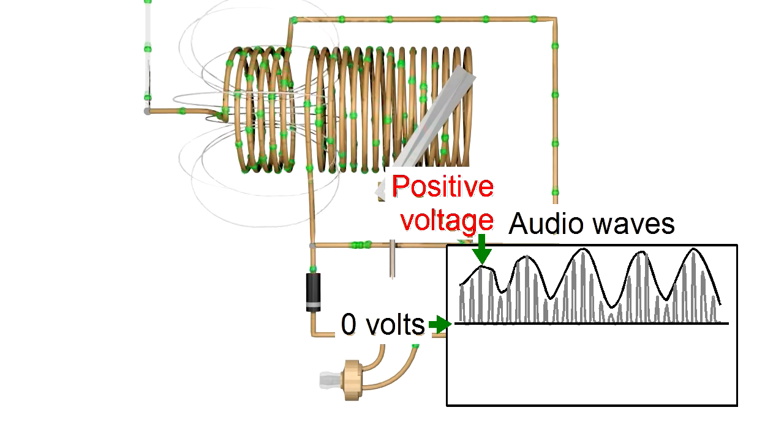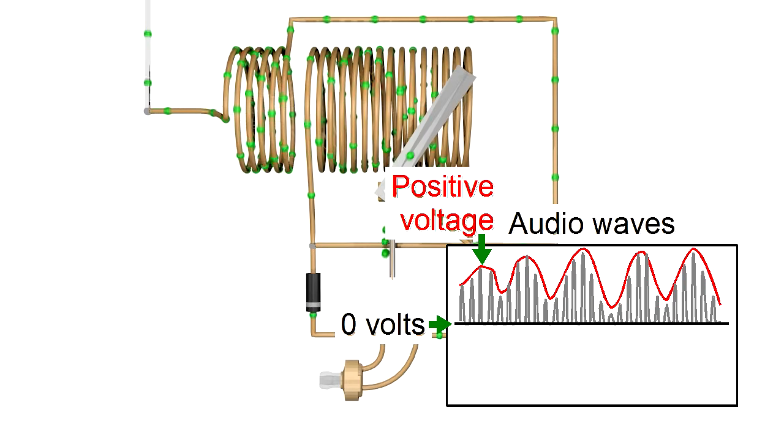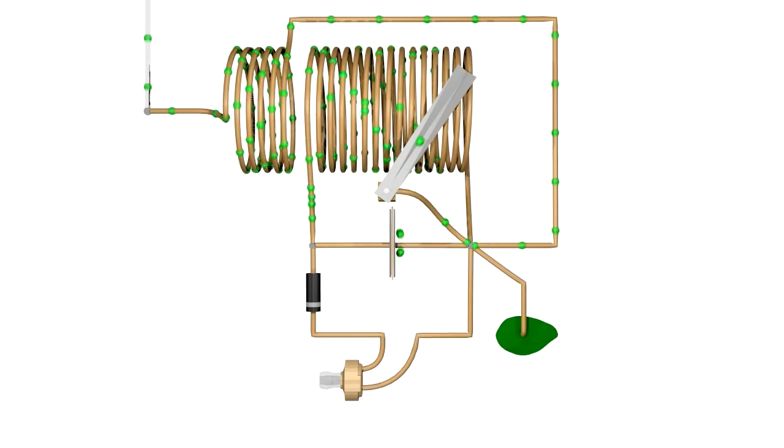But if we chop off all the negative part, which we do with the diode, then the earpiece will always see positive voltages, which it can react to. And notice we're back to the original audio wave. Well, close enough, but we can do better.